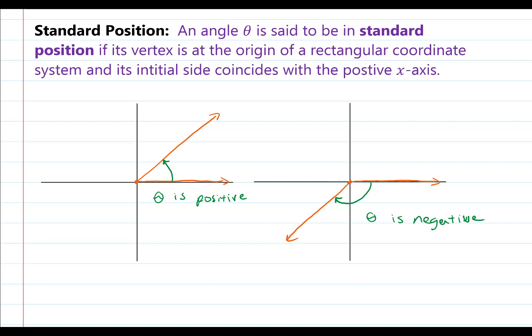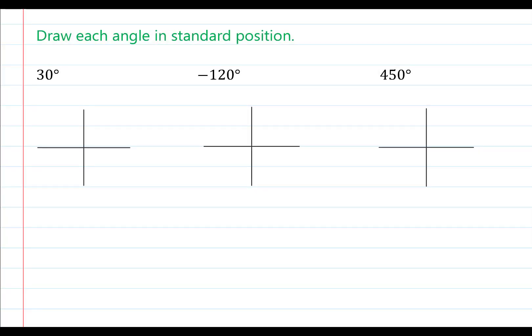Both of these represent angles that are in standard position, as long as the vertex is on the origin and the initial side is coinciding with the positive x-axis. Now I'd like to draw each of these angles — these are really just sketches. In order to do these accurately, I would need tools or technology. I'm going to draw each angle in standard position, starting with 30 degrees. All of these are going to have the same initial side and the same vertex when drawn in standard position.